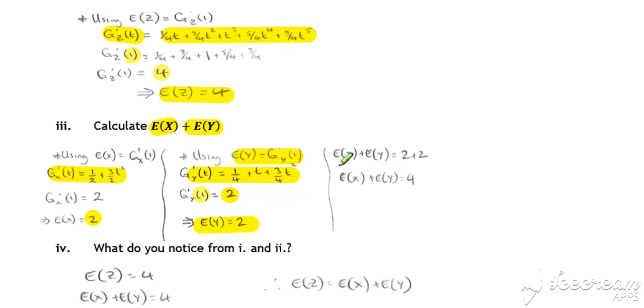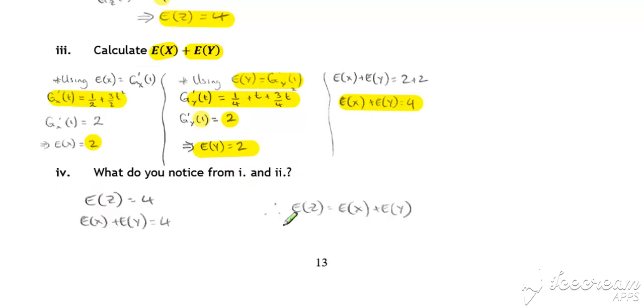And that supports the result, that expected value of Z is 4, and the expected value of X plus the expected value of Y is also equal to 4. So they're equal to each other. And that's what we're expected to notice from parts 1 and 2. The expected value of Z was equal to the expected value of X plus the expected value of Y. And that's true for any independent discrete random variables. The expectation will be the sum of the two expectations.